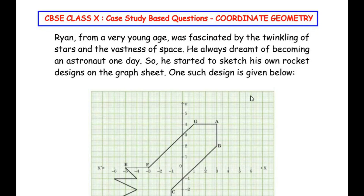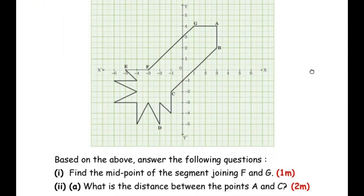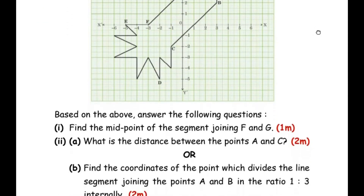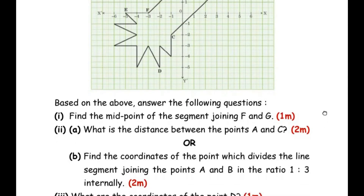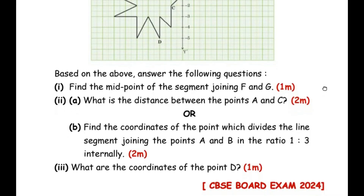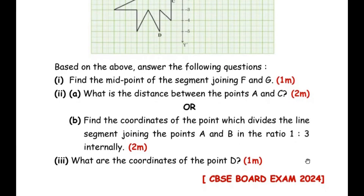Hello and welcome to my channel. In this video we are going to solve a case study based question from the Coordinate Geometry chapter. This question has three sub-questions. The first sub-question is for one mark, the second is for two marks and has an OR question — either you can attempt the A question or the B question. The third sub-question is for one mark. This question is taken from CBSE Board Examination 2024.